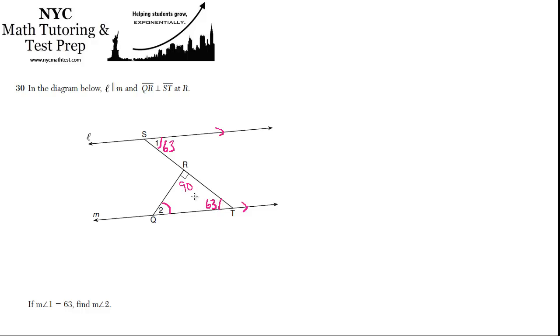and this is 63, the sum of the internal angles must be 180, so angle 2 must be 180 minus 90 minus 63, which equals 27. That's the correct answer.